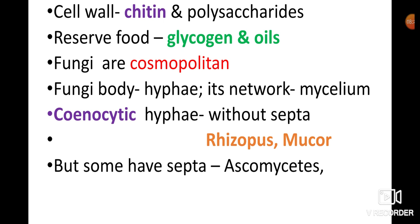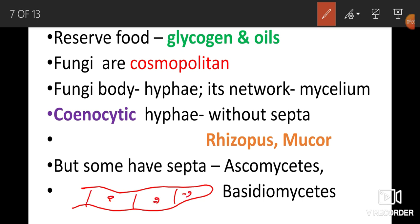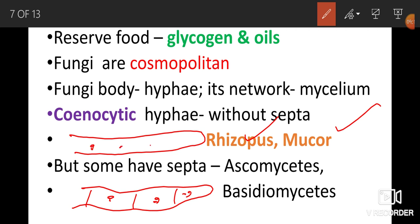Some fungal members contain septa between the nuclei — these are called septate hyphae. Examples are class Ascomycetes and class Basidiomycetes. In these two classes, septa are present between nuclei. In contrast, Rhizopus and Mucor have aseptate hyphae with many nuclei but no septa — called coenocytic hyphae.